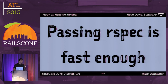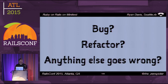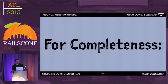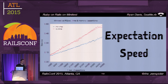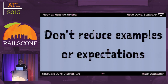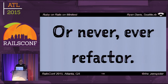'But Ryan, passing RSpec is fast enough.' I actually agree — as long as everything plays nice. But what happens when you have a bug or you refactor? When I'm refactoring I might make a change and have a hundred tests fail all of a sudden — then you pay. For completeness, the speed of actual assertions in both systems is purely linear, and the speed of running tests at the method level is also linear. Do not try to regain speed by reducing examples or expectations — that reduces the quality of your tests. If you want speed, Minitest will always be faster than RSpec — so switch to Minitest, or never refactor or have any bugs.